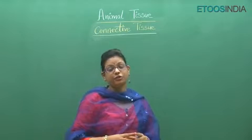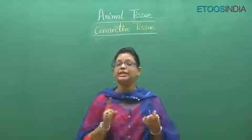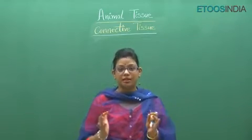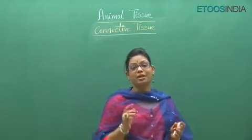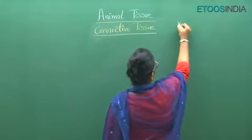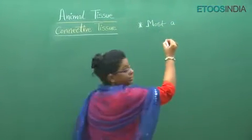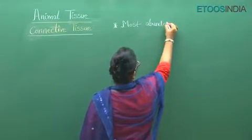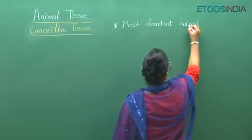Now, if we take all four types of tissues — epithelial, connective, muscular, and nervous — connective tissue is the most abundant tissue found in the animal body. This is an important exam question: which is the most abundant animal tissue? It is the connective tissue.